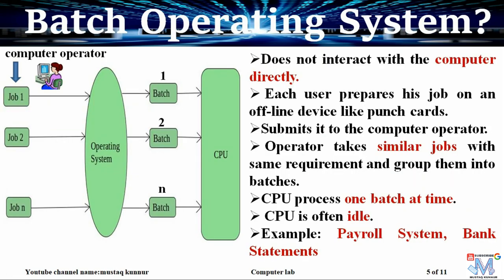In batch operating system, the user does not interact directly with the computer. The user prepares his job on devices like punch cards and submits it to a computer operator. The computer operator gathers all the jobs and makes them into a number of batches. Each batch consists of similar types of jobs based on their characteristics and requirements. Once the operator submits that group of jobs — also known as a batch — to the computer, the operating system sends that batch of jobs one after another to the CPU, which is the central processing unit. In this figure, we can see that initially it takes batch 1, and once batch 1 is completely processed, it goes to batch 2, and similarly it processes all the batches.